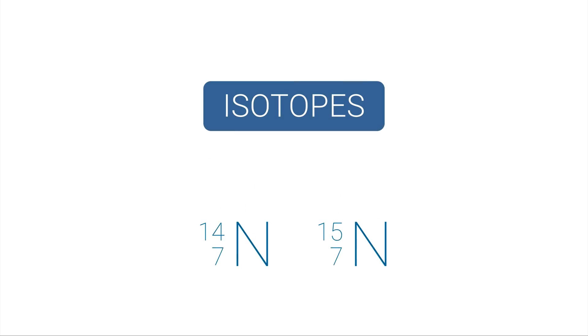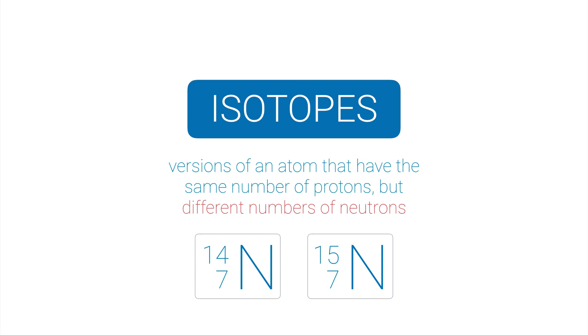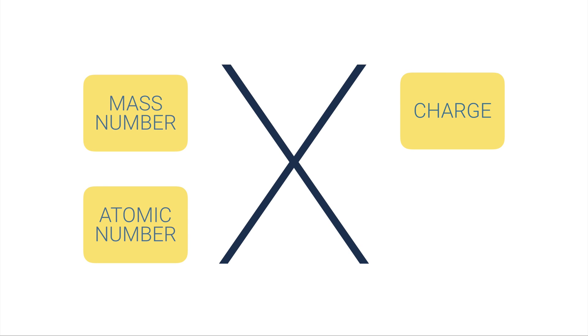Now it's possible that we have nitrogen-14, and actually nitrogen-15 exists. That's just a nitrogen atom with one more neutron than nitrogen-14. These things are called isotopes, and isotopes are versions of an atom that have the same number of protons but different numbers of neutrons. And a lot of elements in the periodic table exist in a wide variety of isotopes.